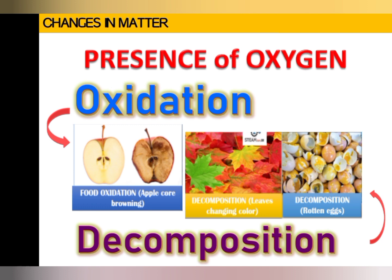The presence of oxygen may bring a chemical change. An example is oxidation and decomposition. Oxygen is in the air that surrounds us. Some fruits like apple and mango, and some root crops like sweet potato, have enzymes which when combined with oxygen give a brown color — a sign of food spoilage. When apples are cut in half and the flesh is exposed, after a few minutes there is discoloration caused by oxidation.